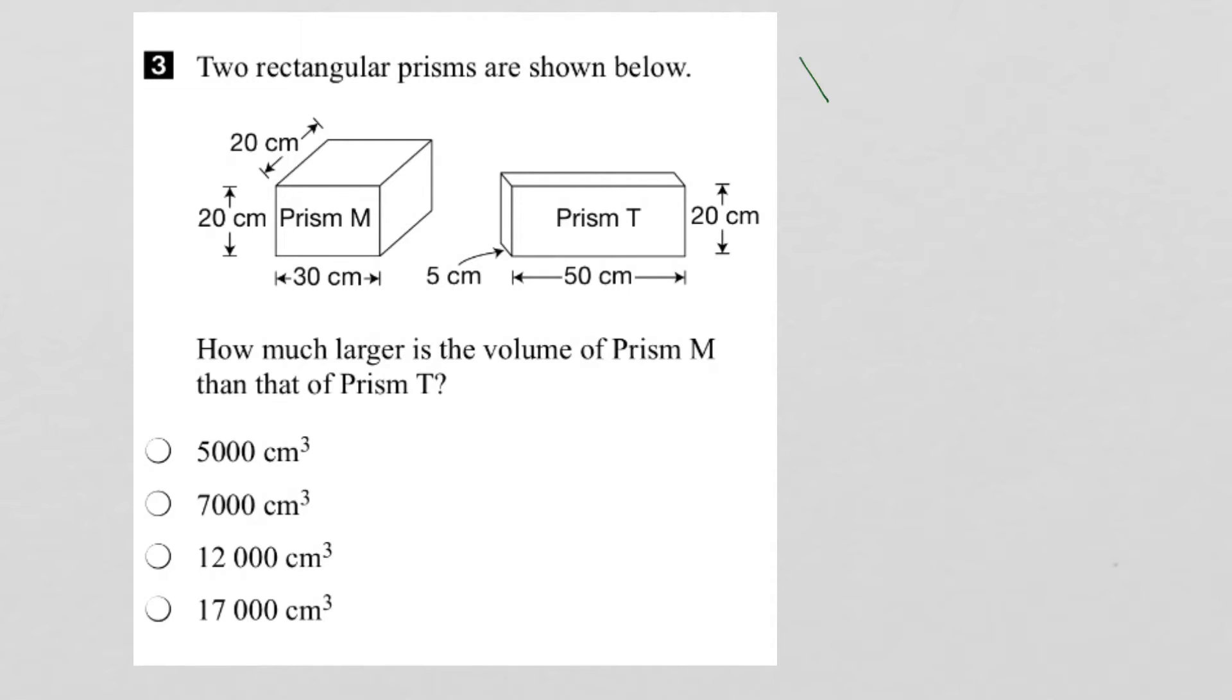Well, volume is a measure of the length times the width times the height of a rectangular prism. Because a rectangular prism is three-dimensional, we will have three different variables: length, width, and height.